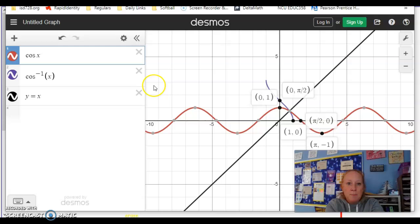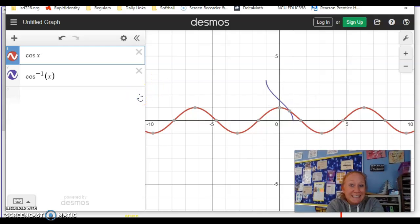The domain that I was originally looking at on the red graph, the original cosine graph, was 0 to π. So that means now the range on the inverse is 0 to π.